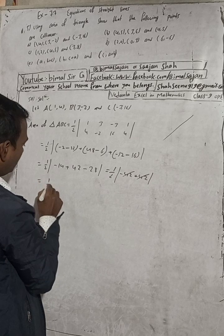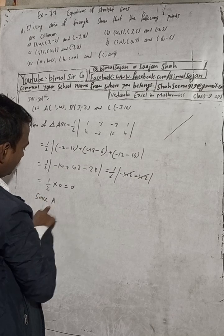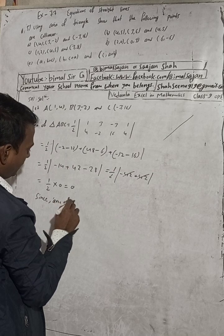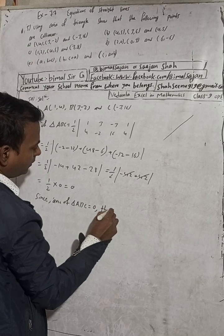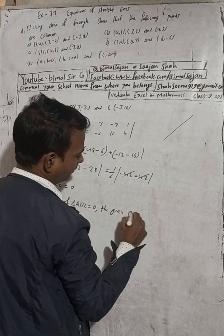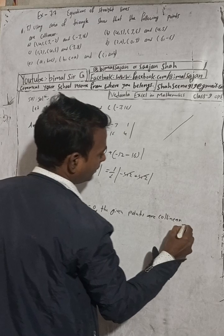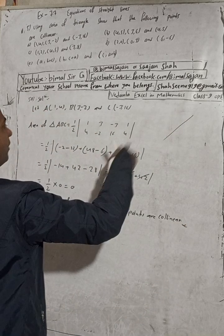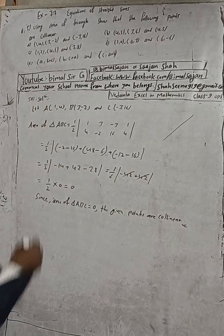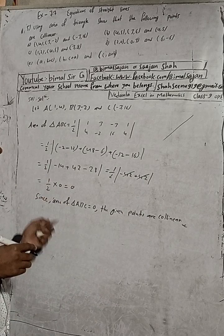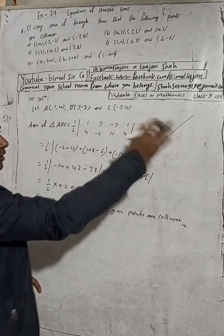The result is 1/2 into 0, which equals 0. Since the area of triangle ABC is zero, the given points are collinear. The area found for these three points is zero, meaning no triangle is formed — the points lie on a straight line. If the area were greater than zero, the points would not be collinear, but since it is zero, they lie on the same line.